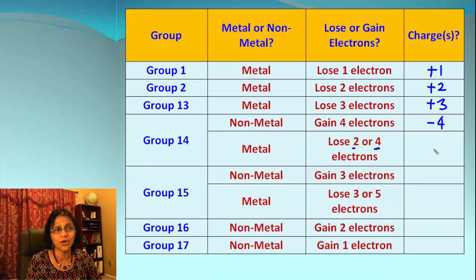Then we get group 15. Same situation. If it's a non-metal, it's going to gain three electrons. The charge will be negative three. If it's a metal, it's going to lose either three or five, so charge will be positive three and positive five.